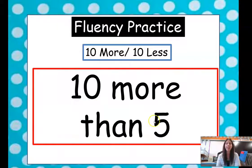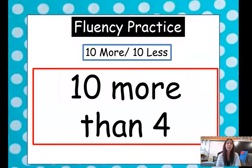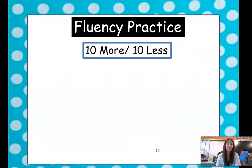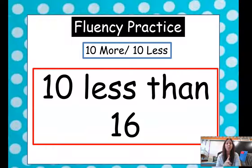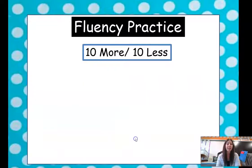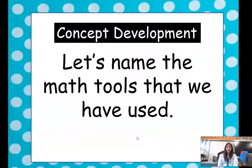So if we have 10 more than 5 we're going to have 15. 10 more than 8 we'll have 18. 10 more than 4 we'll have 14. 10 more than 5 we'll have 15. Now we're doing 10 less. So if we take away that 10, what are we left with? Just 6. 10 less than 16 is 6. 10 less than 15 is 5. 10 less than 18 is 8. Good job!